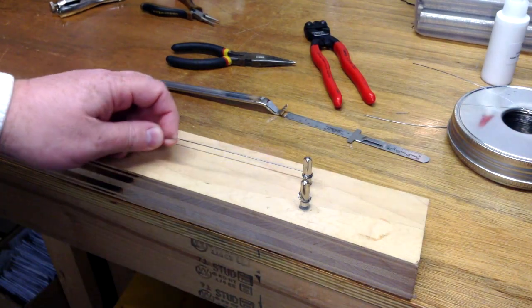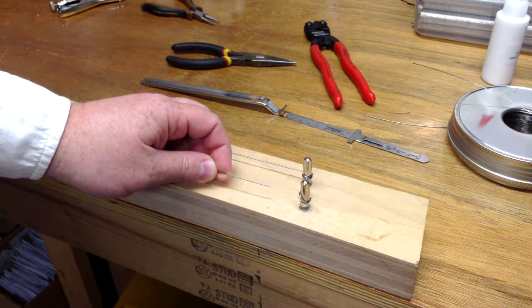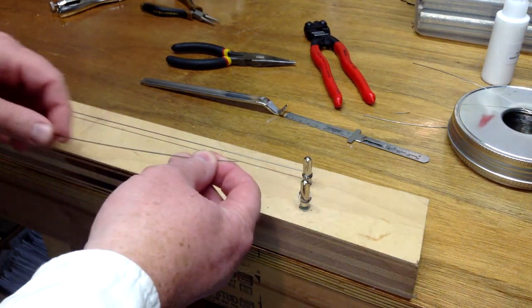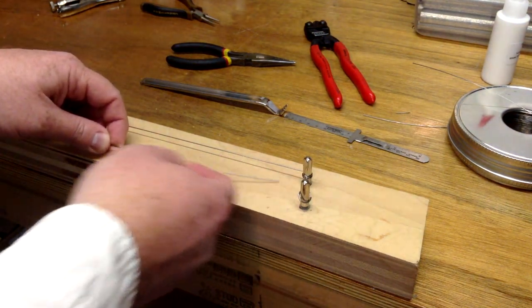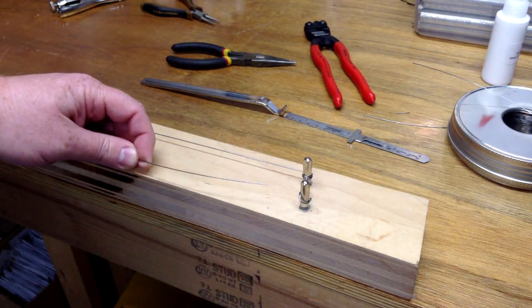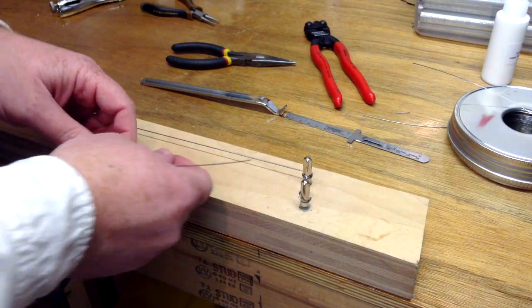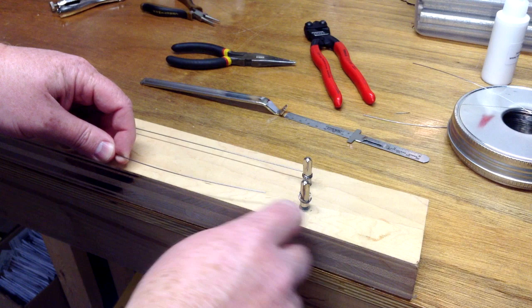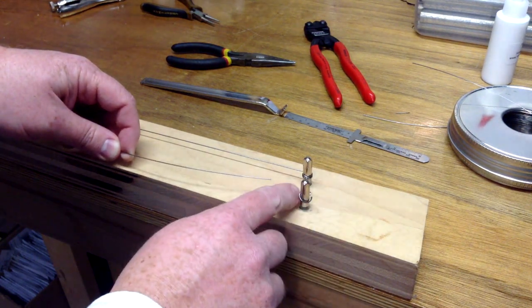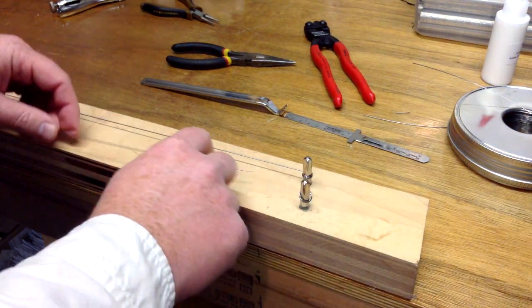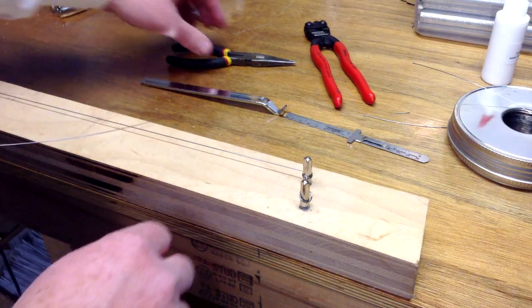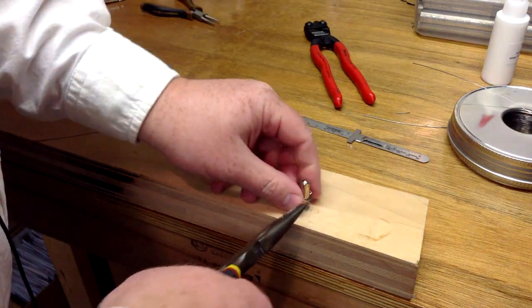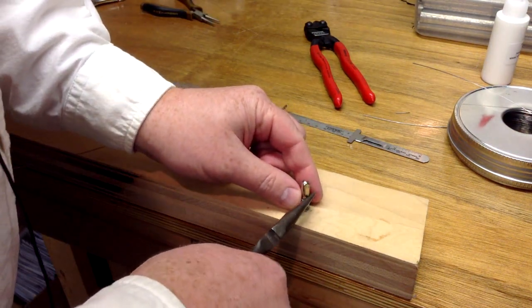Now here I've got a string, as you can see it's been cut. This isn't a bass string, but for demonstration purposes we're going to use this to show the tying of the string. Here I've cut it off kind of duplicating what a break would be right at the base of the tuning pin, like we talked about as a good way to be able to tie the string.